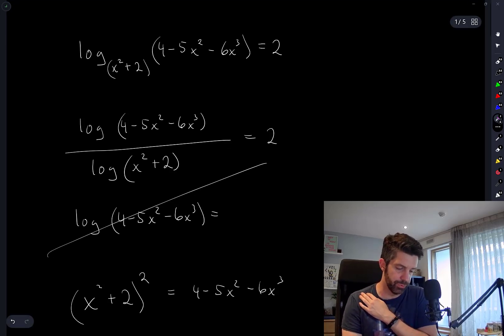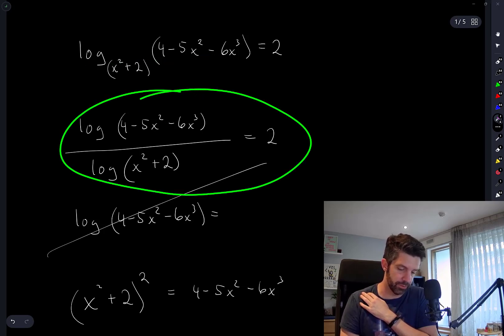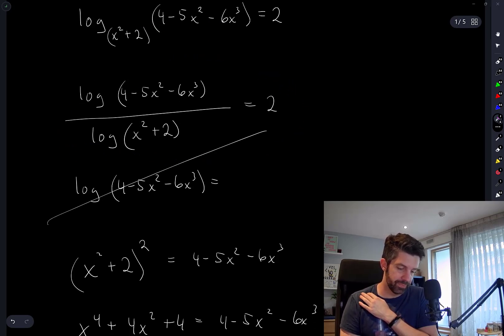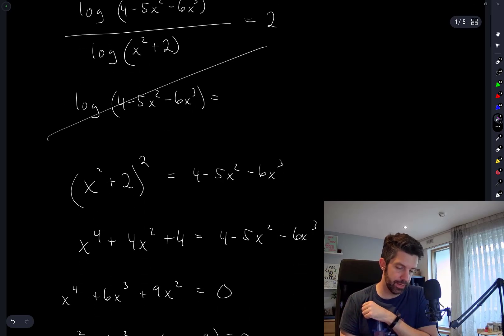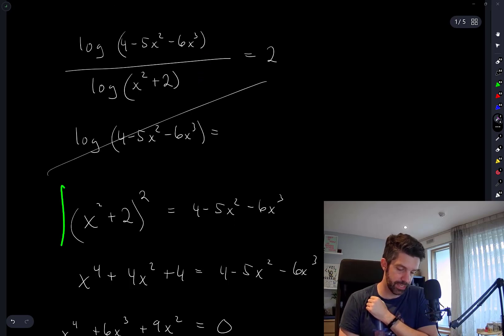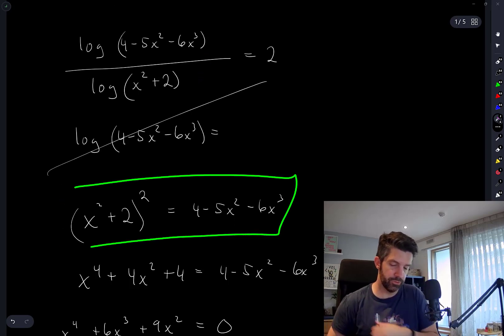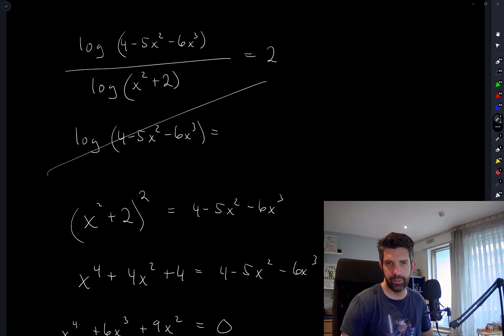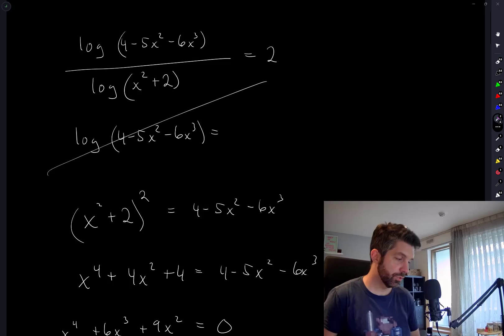I don't know why I wanted to go through this route of writing this as the log of something divided by the log of something else. But of course, after I exponentiated everything, if I continued with this, it would have turned into this equation anyway. It would have taken a little bit longer, but I should have gotten to the same answer.